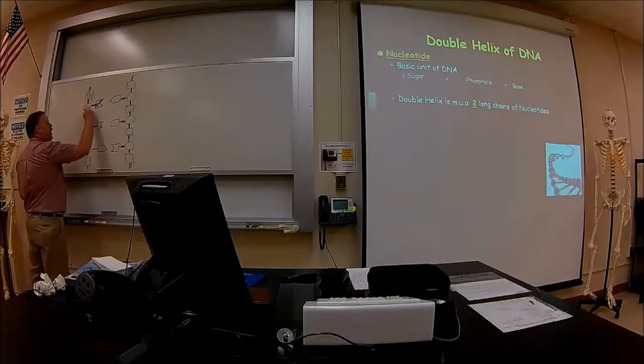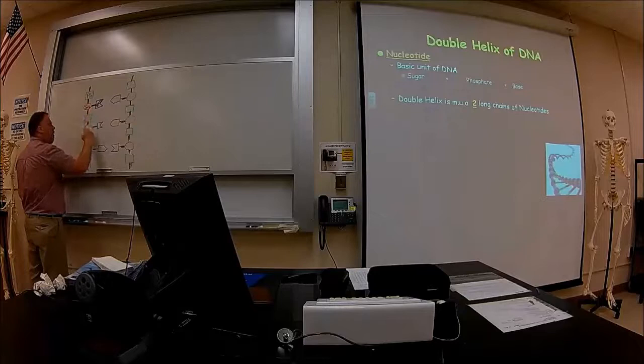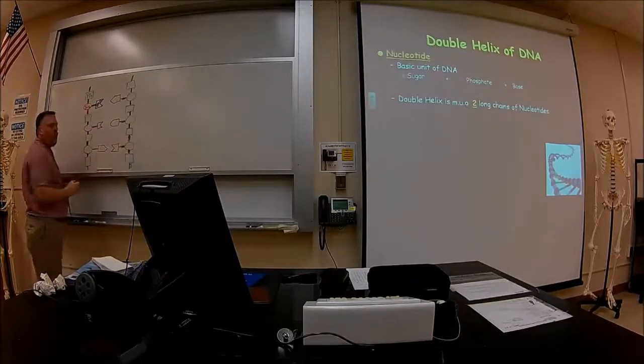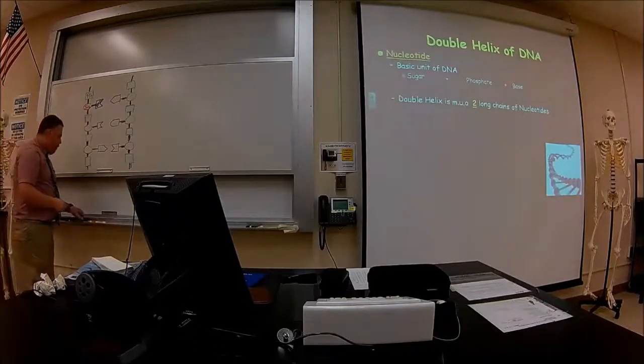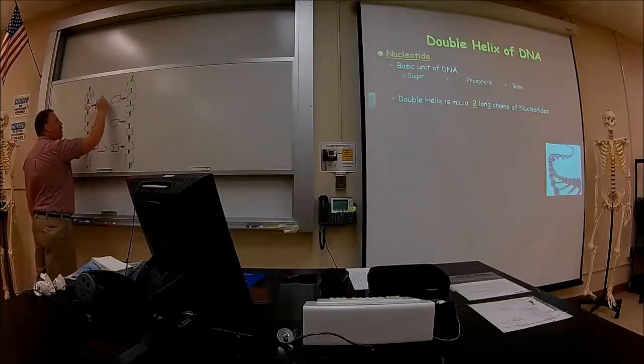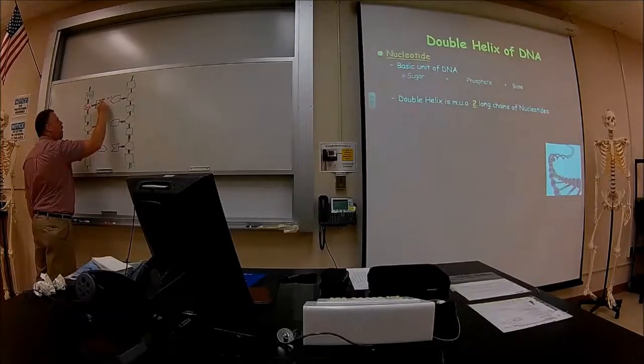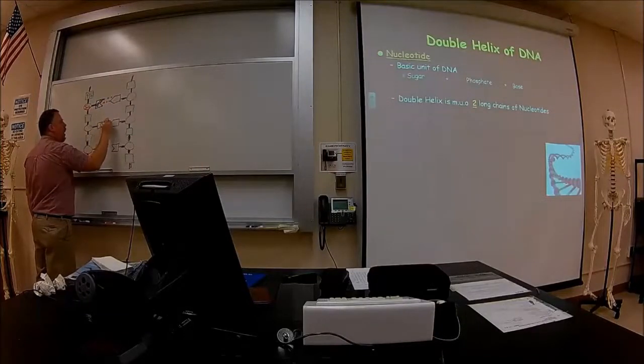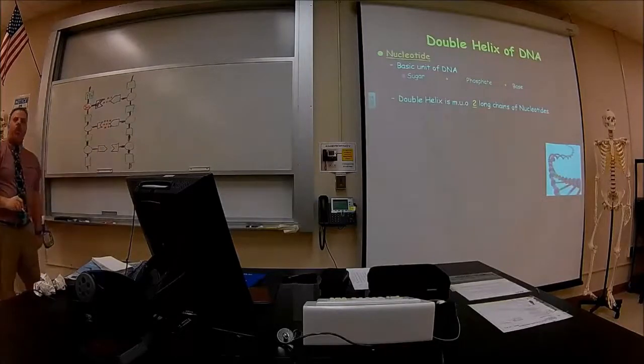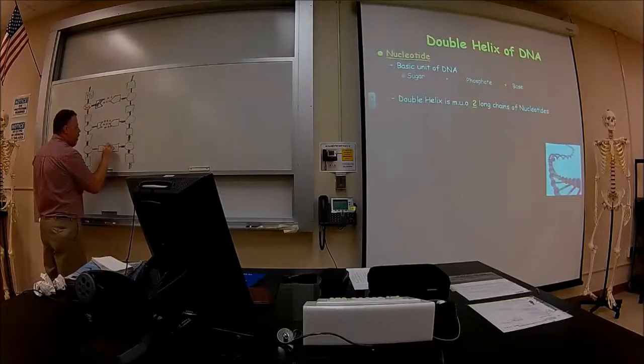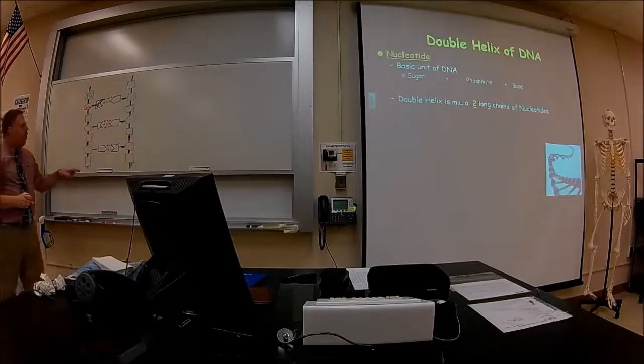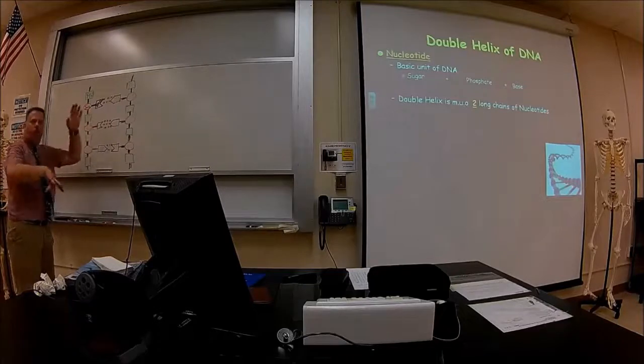The bonds over here are strong bonds. These are covalent bonds in black here. Very difficult to break them. But we do have bonds in between bases here. These are hydrogen bonds. And when you get through my chemistry lecture, you'll learn that hydrogen bonds are very weak. We can easily break those, and we'll want to do that.